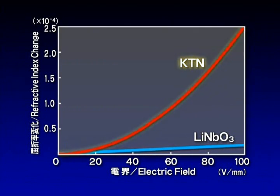The KTN crystal has better electro-optic characteristics than lithium niobate, the current material of optical switches.